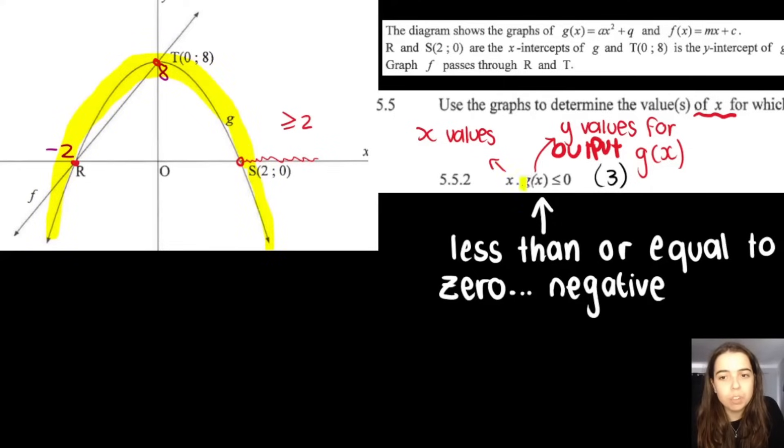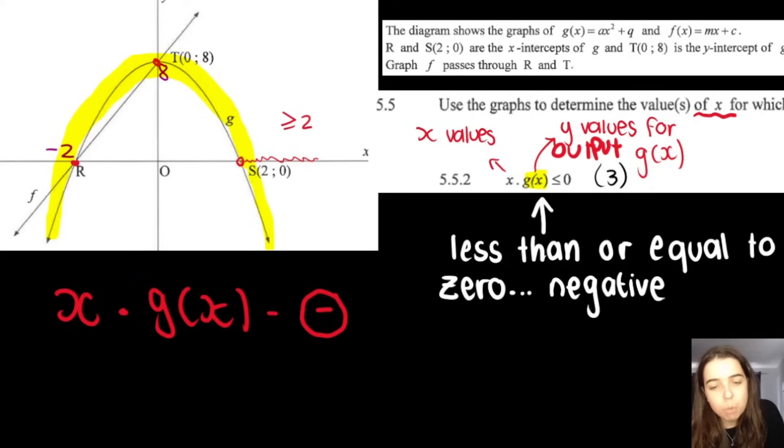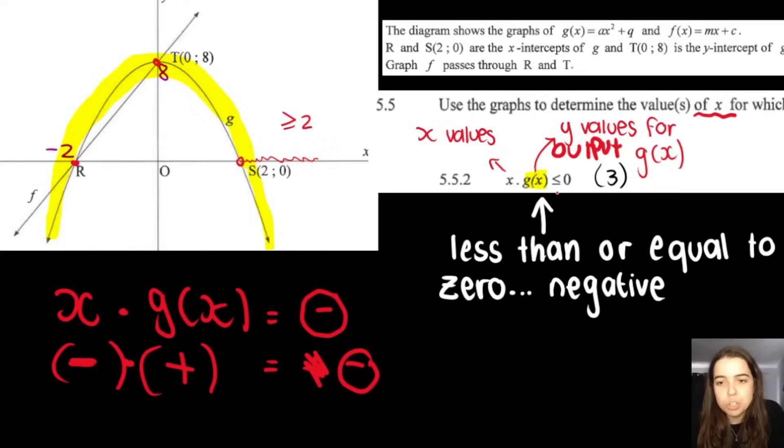We're looking for the y values of g of x multiplied by the x values and that product must give me negative numbers. Now the first way to think about this is something multiplied by something must give me a negative. We know that if my x values are negative and my g of x is negative, that's not going to give me a negative, that's going to give me a positive. So this is wrong. But if I look for where x's are negative and where g of x is positive, then a negative multiplied by positive is going to give me a negative value, which is what I'm looking for.